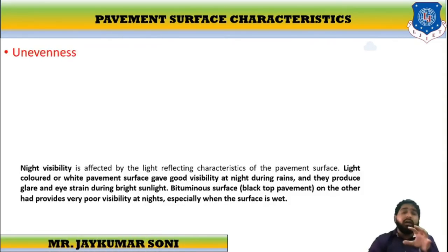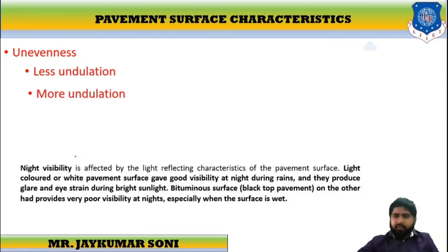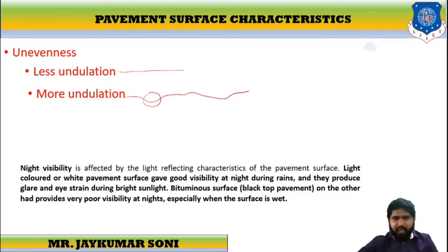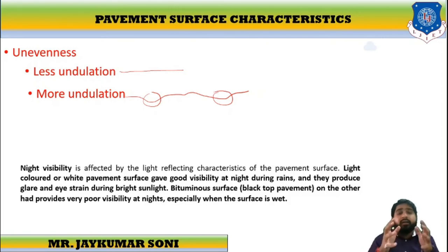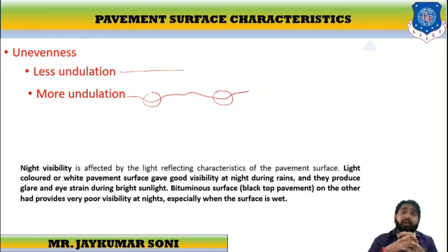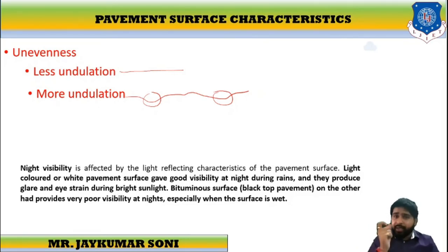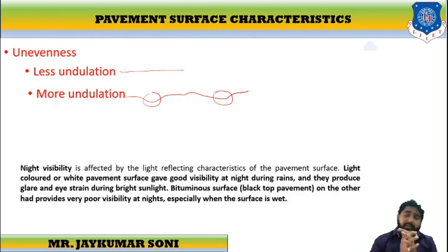Another phenomenon is unevenness — the steadiness of the road. There are two types: less undulation and more undulation. Undulations are small slopes, holes or potholes. If roads have less undulation, vehicles will travel with more efficiency and better riding comfort. If there are more undulations, the mileage of the vehicle will be reduced and driving safety and comfortability will be compromised.